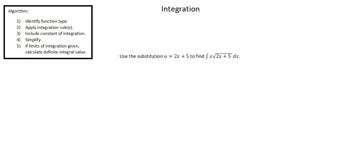Our problem reads: use the substitution u equals 2x plus 5 to find the integral of x times the square root of 2x plus 5 with respect to x. Notice in this example that we're given the substitution to use. Identifying a substitution to use and identifying when to use substitution is another skill. We're going to focus in our examples on how to perform integration with a given substitution.